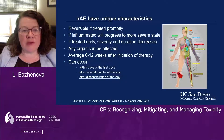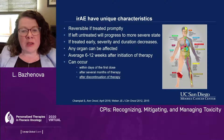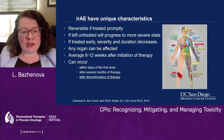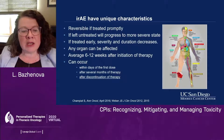Immune-related adverse events have unique characteristics. They are reversible if treated promptly. If left untreated, they will progress to a more severe state, and if treated early, you will see that duration and severity of immune-related adverse events will be lower. There is no rule — any organ can be affected. On average, immune-related adverse events will start about 6 to 12 weeks after initiation of therapy. However, it could happen within days of the first dose and, most importantly, it could happen even after you discontinue immunotherapy.